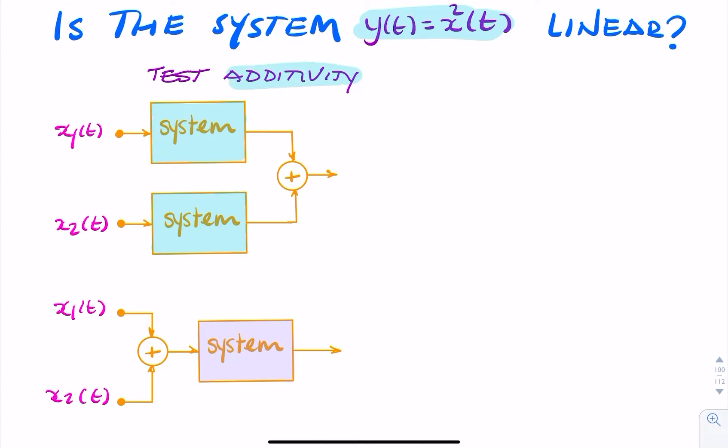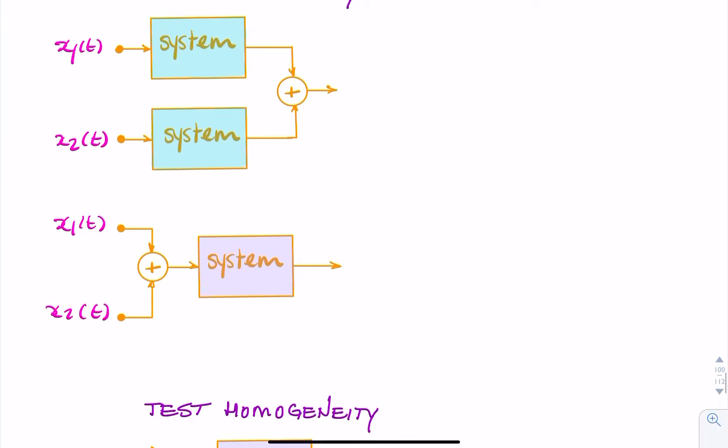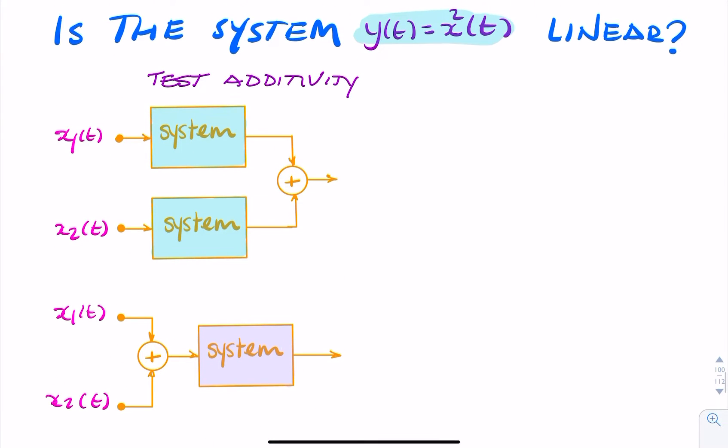To do that, we test additivity and then we test homogeneity. If it passes both tests, it's a linear system.